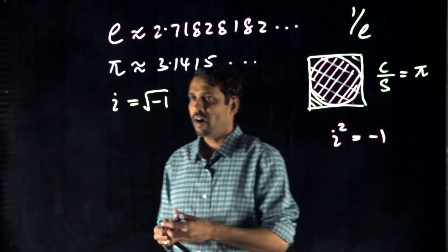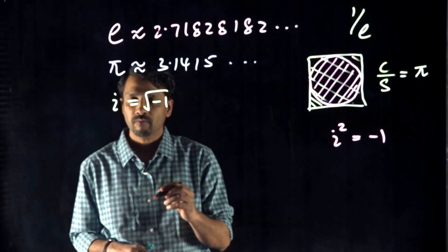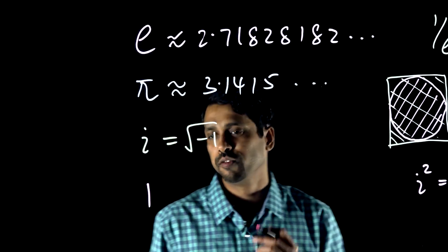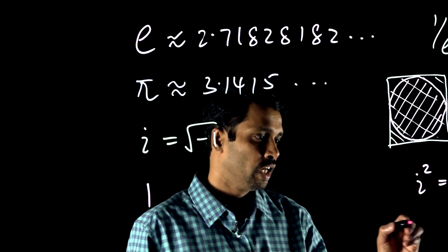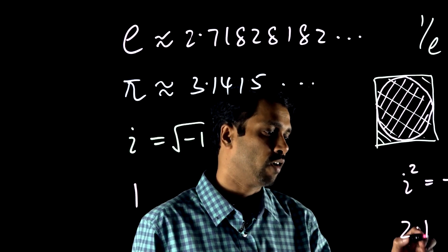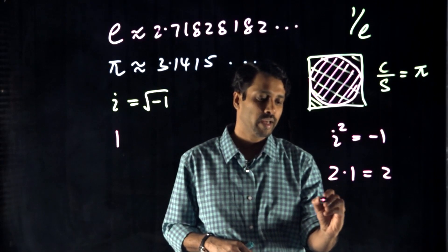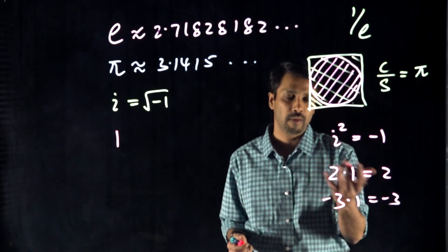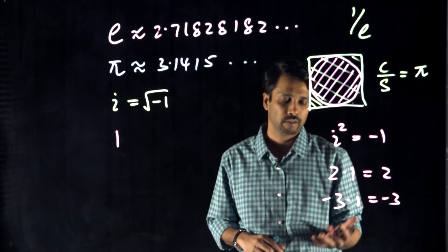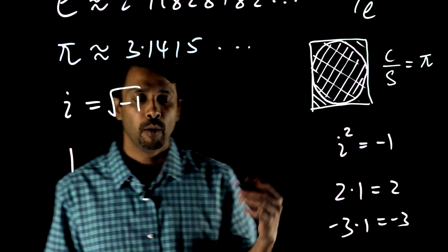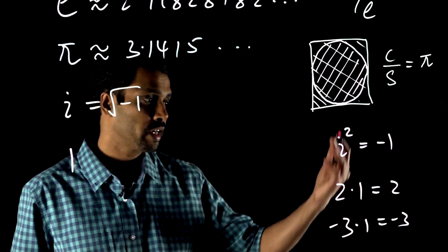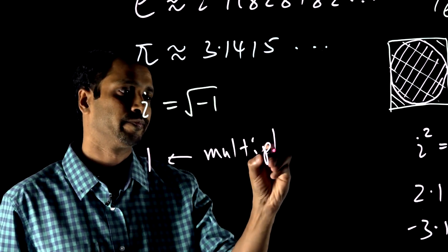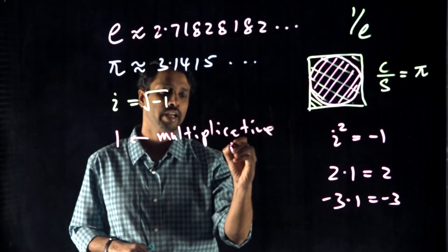And then we have more. How about 1? What is 1? 1 is a really beautiful and important number. For example, when you multiply 2 with 1, it is 2. When you multiply negative 3 with 1, it is negative 3. Nothing happened — when you multiply by 1, you get the number itself. So that's what we call the multiplicative identity.